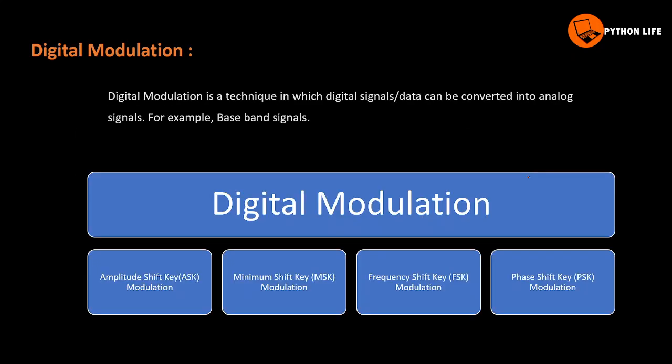Digital modulation is a technique in which digital signals and data can be converted into analog signals. For example, baseband signals. The short way is digital modulation.